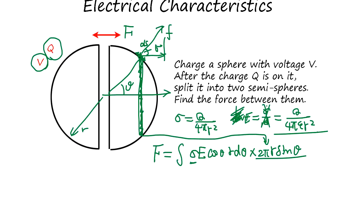The total charge Q is going to generate the force in this direction F. So F equals σ, where σ is Q over 4πr², and E is Q over 4πε₀r², times 2πr² cosθ sinθ dθ.